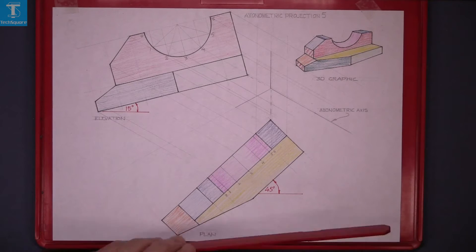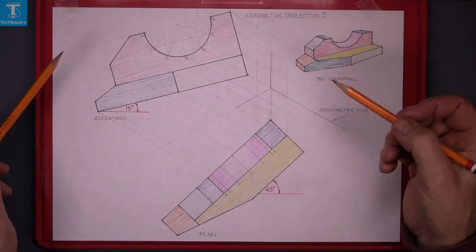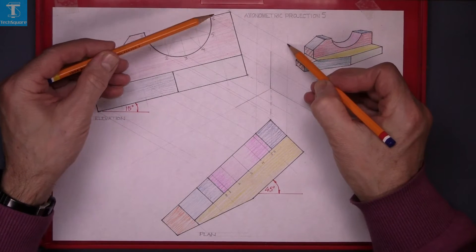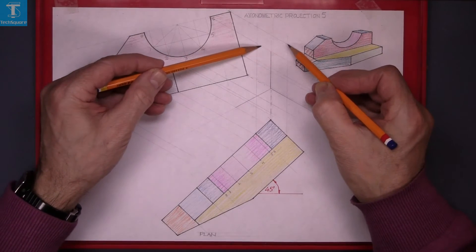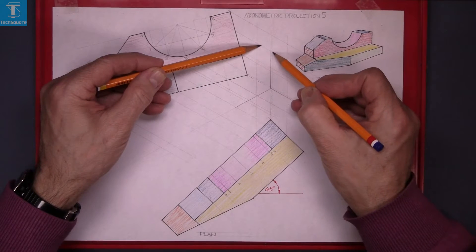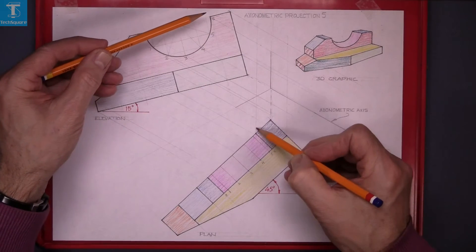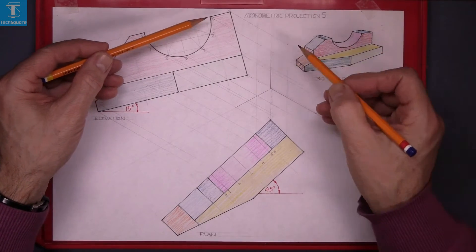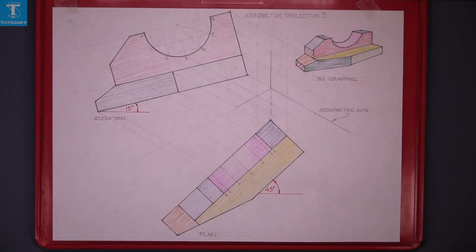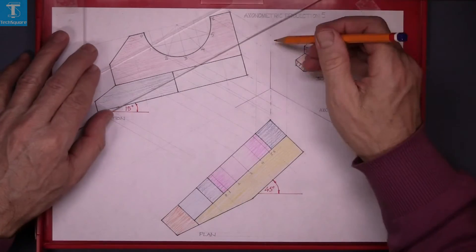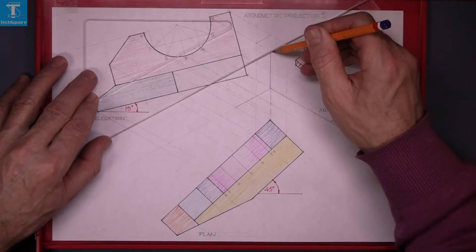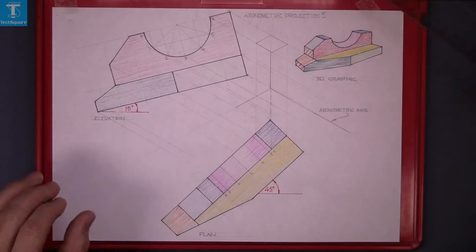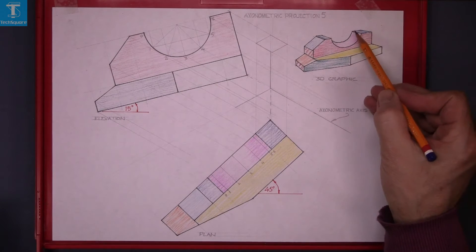And now trace the points from the plan and elevation in to get the isometric view of each point. So that's three points and that's four points. Now we line in those four points and that's the top of that little piece there.